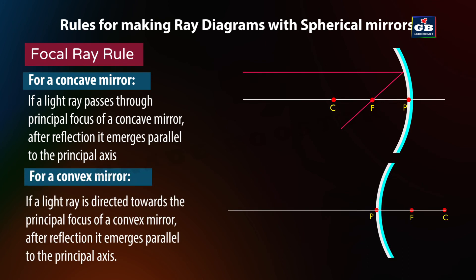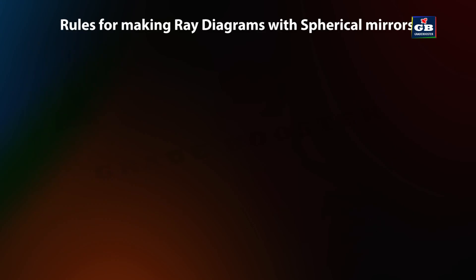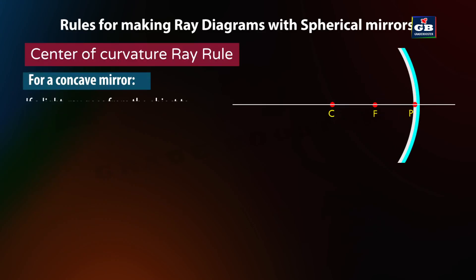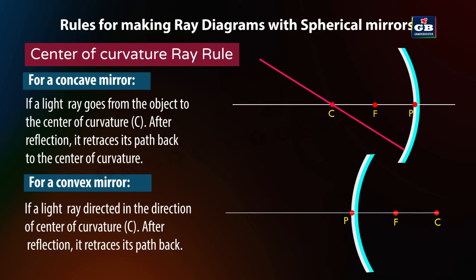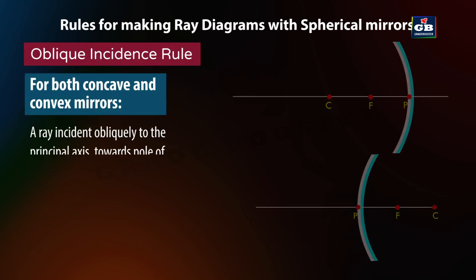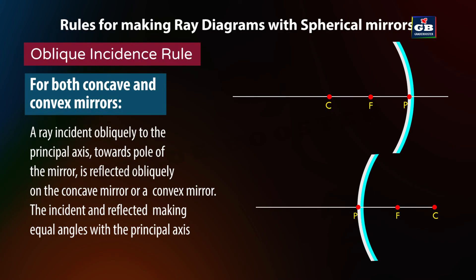For a convex mirror, if a light ray is directed towards the principal focus, after reflection it emerges parallel to the principal axis. A ray directed towards the pole of a concave mirror or a convex mirror is reflected such that the incident and reflected rays make equal angles with the principal axis.